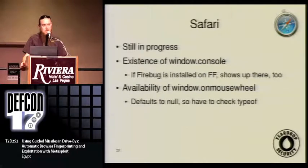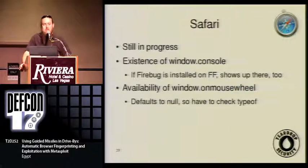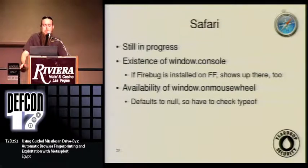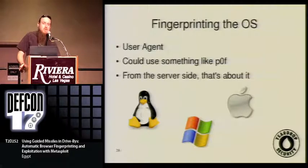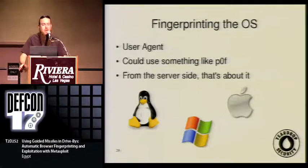Safari is still sort of a work in progress. I haven't spent a lot of time trying to fingerprint it yet, and we don't have any relatively new exploits for Safari yet — I'm working on that. Safari is mostly standards-compliant in its JavaScript implementation; there aren't many extensions to the standard JavaScript libraries. So you can't really tell much more than that it is Safari at this point. Fingerprinting the OS from the server side using traditional user agent string matching is subject to the same problems, and we could also use something like P0F for passive fingerprinting using TCP artifacts — but that sounds like work.